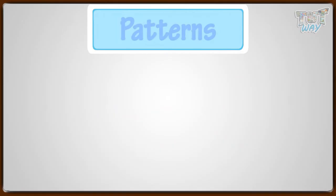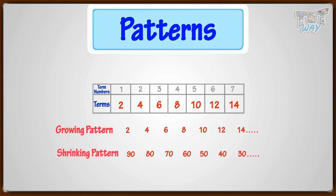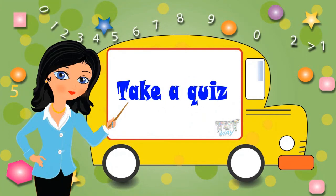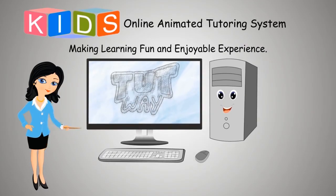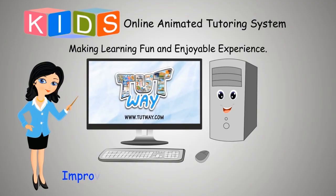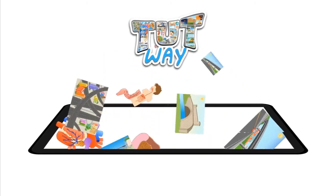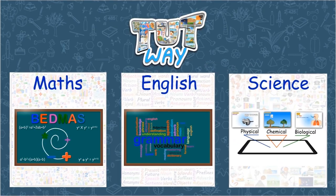So kids, today we learned about patterns: terms, term numbers, and 3 types of patterns — growing patterns, shrinking patterns, and repeating patterns. Now go ahead and take a quiz to learn more. Bye-bye! Tootway has thousands of animated videos on math, English, and science to clear the core basics of these subjects.